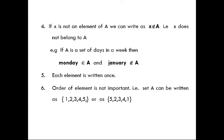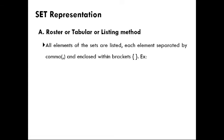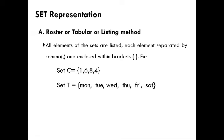There are mainly two methods to represent a set. Method number one is the roster method, also called the tabular method or listing method. In the roster method, all elements of the set are listed, each element separated by a comma and enclosed within brackets. For example, set T = {Monday, Tuesday, Wednesday, Thursday, Friday, Saturday} — this is the roster method.